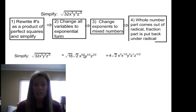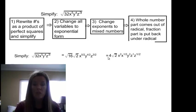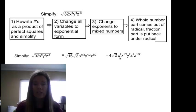So instead of x to the fifth, I have x to the 5 halves. Instead of y to the fourth, I have y to the 4 halves. And instead of z cubed, I have z to the 3 halves. Next, I want to change any exponents that are improper fractions to mixed numbers. The square root of 16 is 4. I reduce 5 halves: 2 goes into 5 twice with a remainder of 1 half, giving me x squared times x to the 1 half.